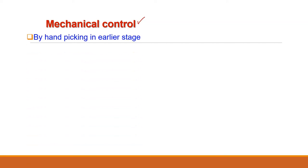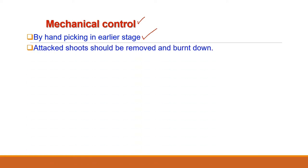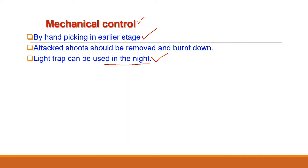For mechanical control, at the initial stages by hand-picking, the infested shoots should be hand-picked and destroyed. These infested shoots may be burnt or buried. As the adult is nocturnal and active at night, light traps should be set in the field to trap the moth and destroy it. Pheromone traps are also used to catch the insect.